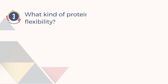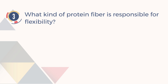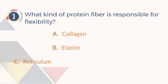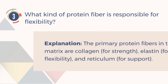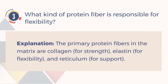Number 3. What kind of protein fiber is responsible for flexibility? A. Collagen. B. Elastin. C. Reticulum. The answer is B. Elastin. Explanation: The primary protein fibers in the matrix are collagen, for strength; elastin, for flexibility; and reticulum, for support.